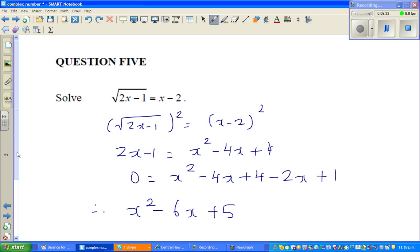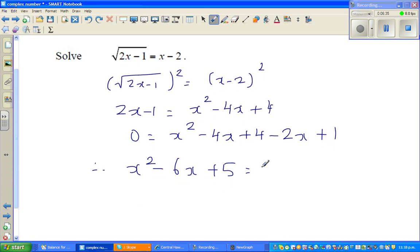Now you have to factor, equals 0. This is level 1 or year 10 factorization. The two factors give you x minus 5 times x minus 1 equals 0. So x is equal to 5 or x is equal to 1.